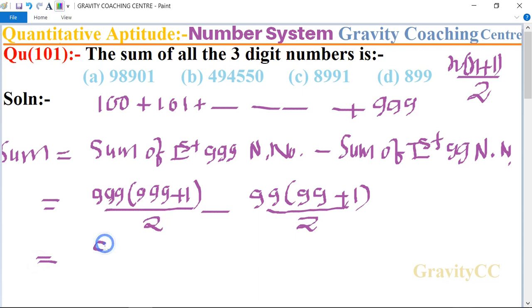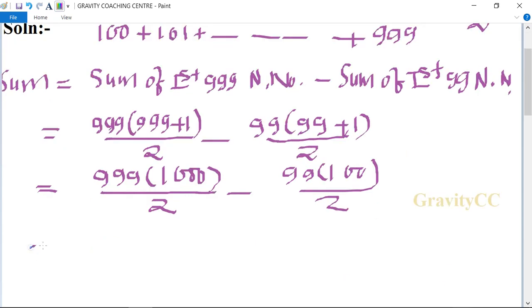999 plus 1 is 1000 upon 2 minus 999 and 100 upon 2. So now we take the